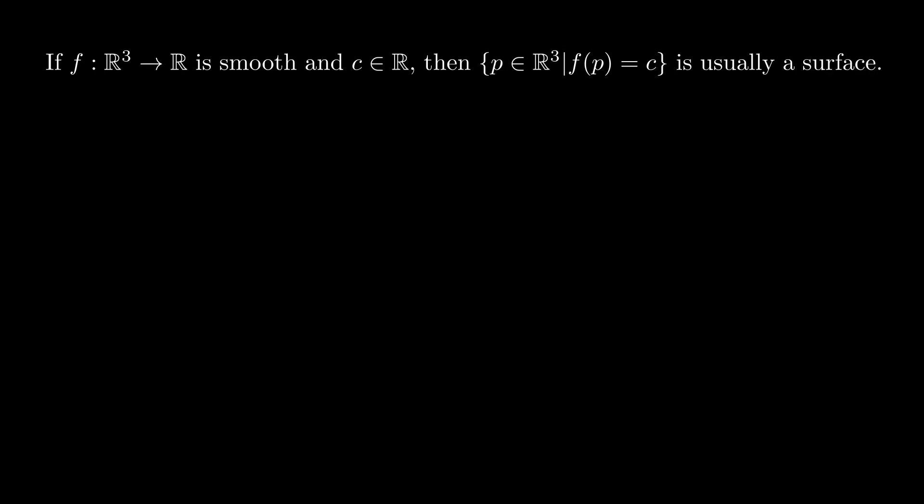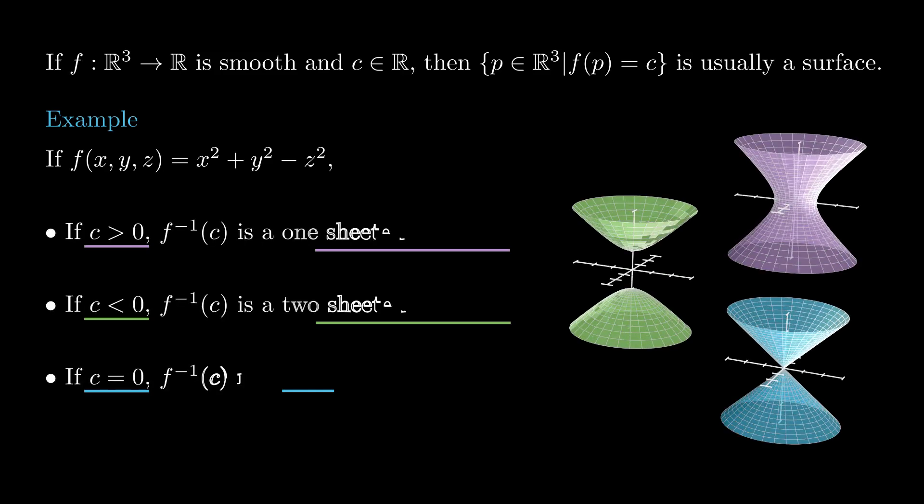Now we will give two important sources of examples of surfaces. If we have a smooth function f of three variables, then its level sets are usually surfaces. For example,